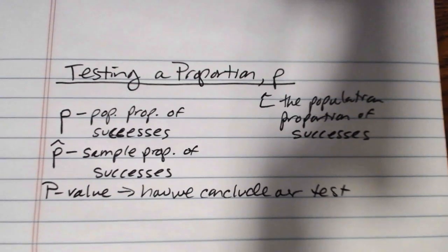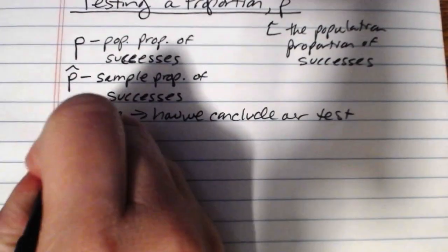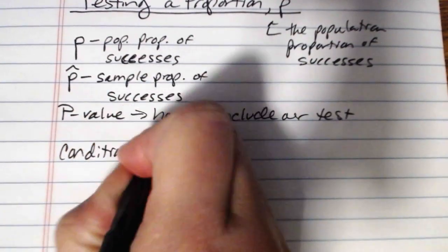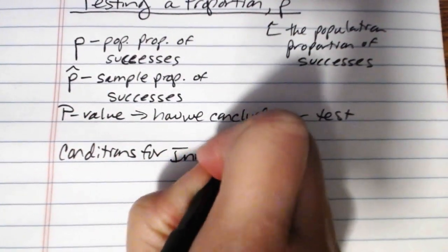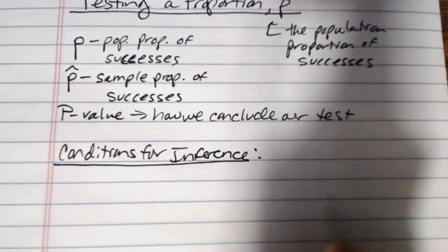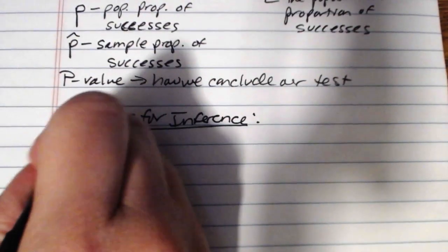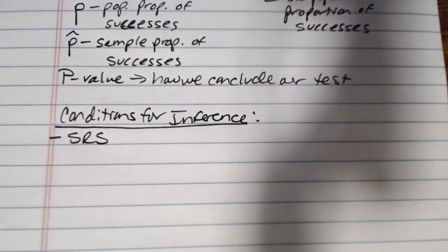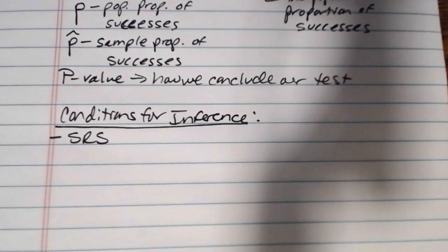Just like what we were looking at with testing means, testing proportions is a very similar process in terms of the overall setup that we follow for hypothesis testing. Just like what we were looking at with means, we have a set of conditions that need to be met. We need a simple random sample. Again, all of these hypothesis tests are based on the notion that your sample was collected randomly. If you have a sample that already has bias introduced, then these hypothesis testing methods do not yield valid conclusions.